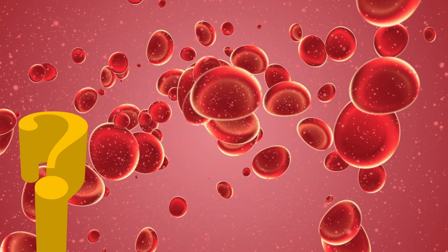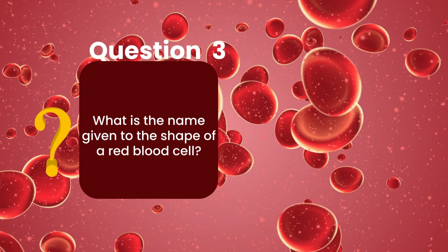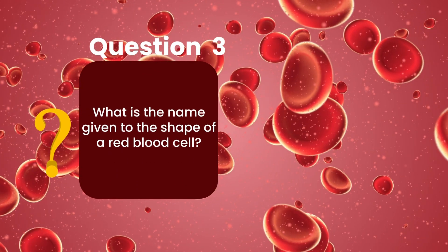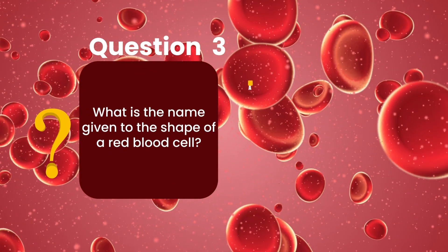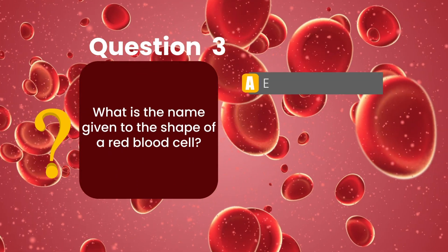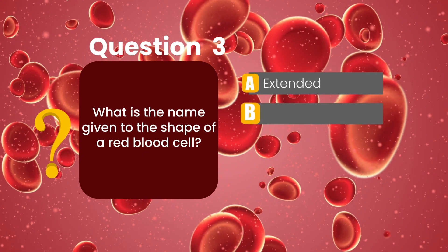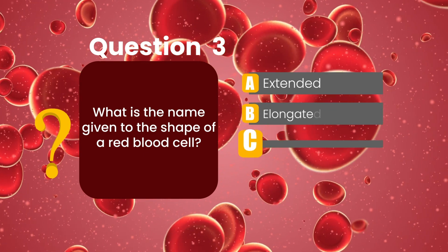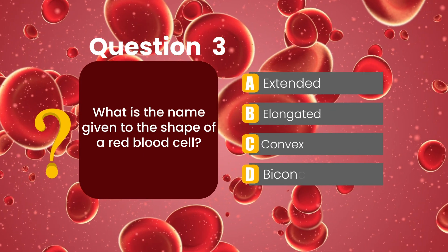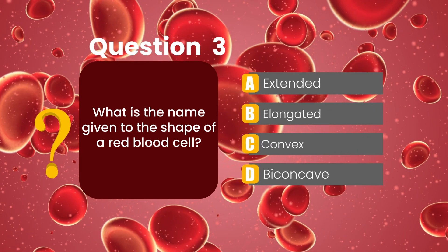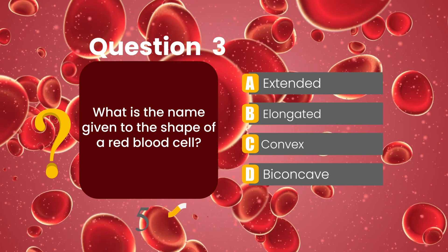Question number three: what is the name given to the shape of a red blood cell? Is it a) extended, b) elongated, c) convex, or d) biconcave?